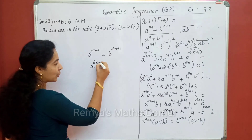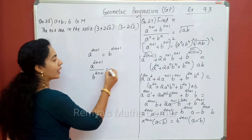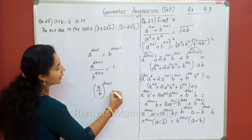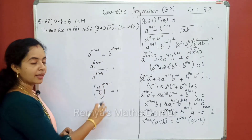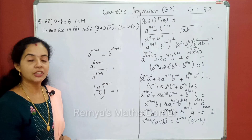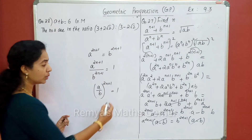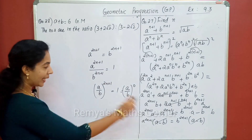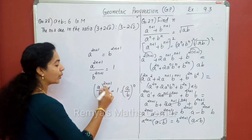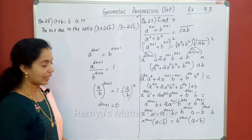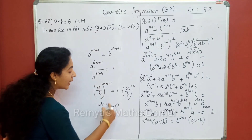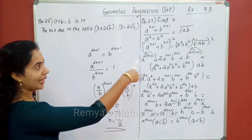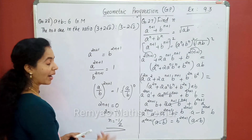Divide: a raised to 2n plus 1 divided by b raised to 2n plus 1 — here we can get a by b to the power 2n plus 1 equals 1. AB raised to 2n plus 1 equals 1, and 1. So, 2n plus 1 is 0. That's why 2n plus 1 is 0. 2n is equal to minus 1. Then, n is equal to minus 1 by 2. That's why this condition is equal to GP. That value is n equals minus 1 by 2.